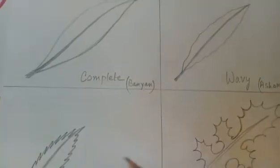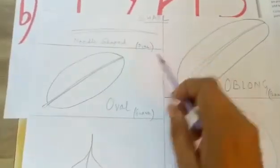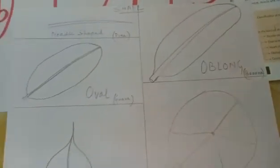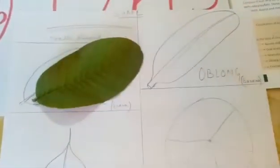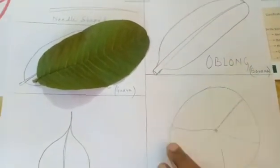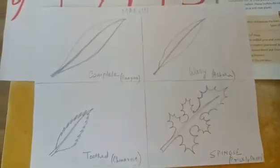So, according to the margin, we have seen four types of leaves. And, according to the shape, we have seen five types. I have shown you a few examples. But, if you have more types of leaves, you can also see at your home or around your home. Thank you.